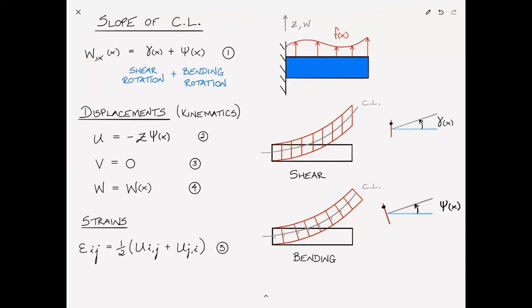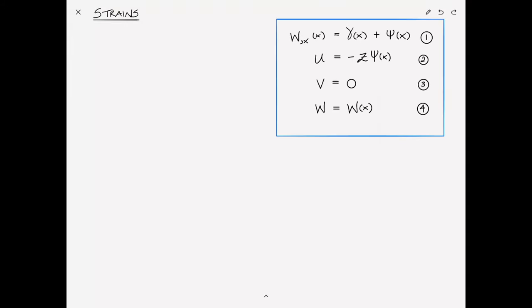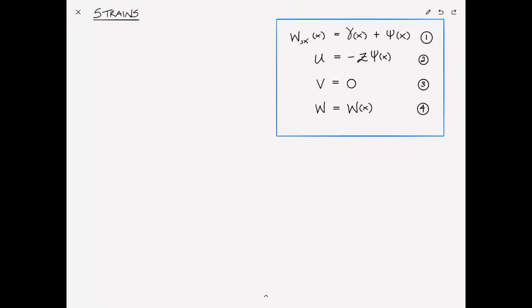Now that we have the displacement field, we can calculate the strains using equation 5. For εxx (i.e., e11), substituting gives εxx = u,x. Since z is constant with respect to x, this equals minus z times ψ,x — the derivative of the bending angle with respect to x.